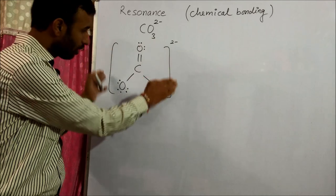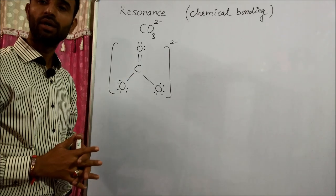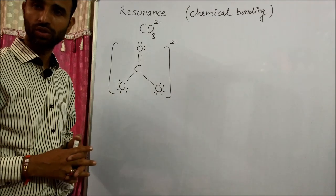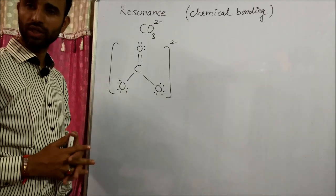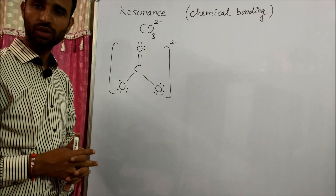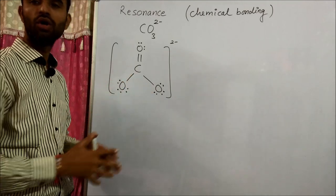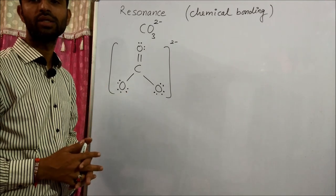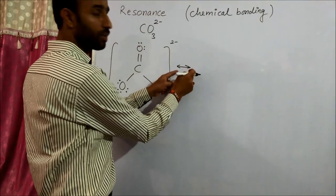The octet is complete, but carbonate cannot be represented by a single Lewis structure. So, when a single Lewis structure cannot explain all the properties of a molecule, more than one structure is required to explain its properties. Those structures are known as resonating structures, and this phenomenon of the existence of more than one Lewis structure is known as resonance.